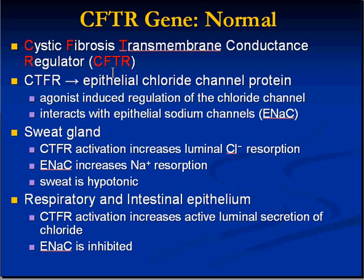In a normal person, a normal CFTR makes a normal epithelial chloride channel, just like you have the ENAC — the epithelial sodium channel. You also have an epithelial chloride channel; it's not called ENAC like sodium, it's called CFTR. The normal sweat gland has CFTR working so you can have free passage of chloride back and forth.